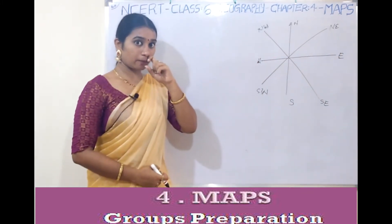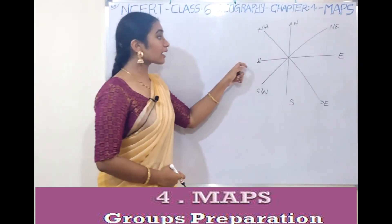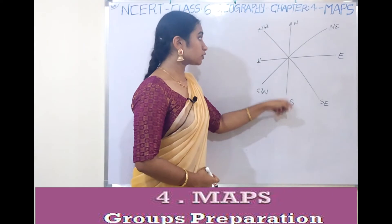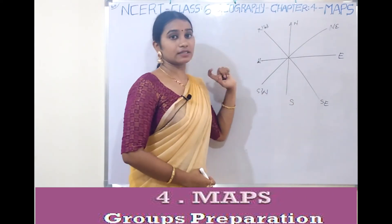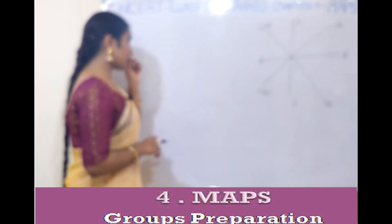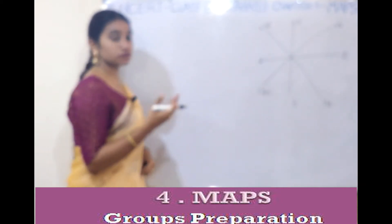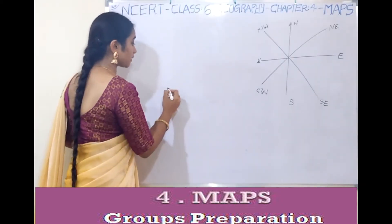These are the intermediary points: south-east, north-east, and north-west. North, south, west, and east are the cardinal points. This is direction. So we use directions — let's look at an example.